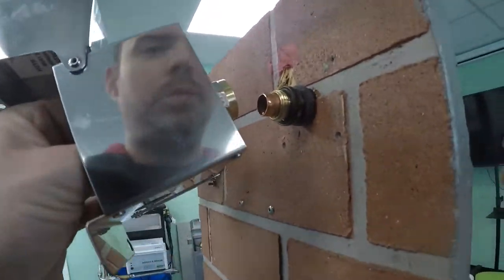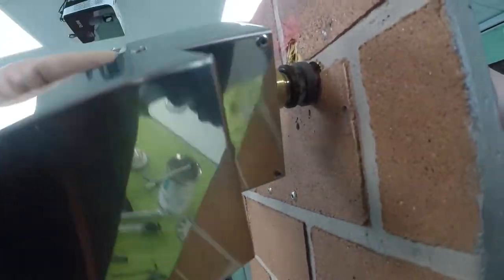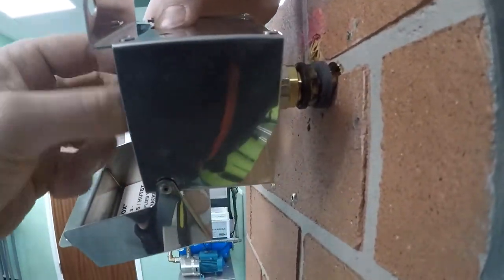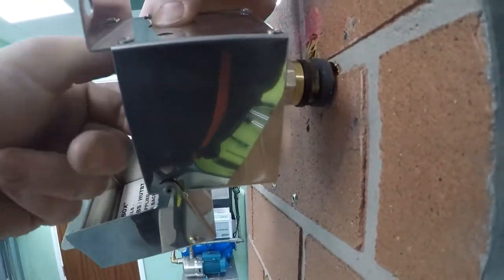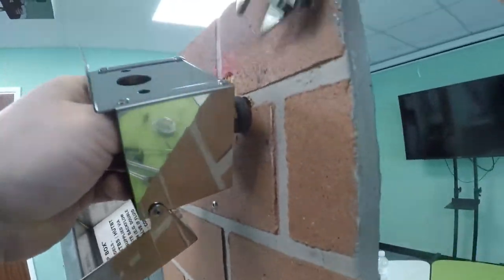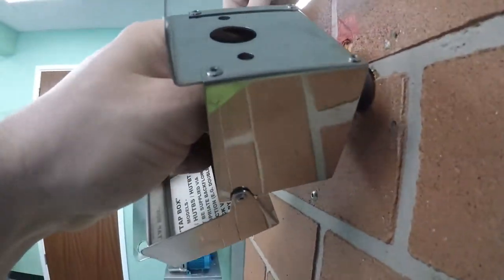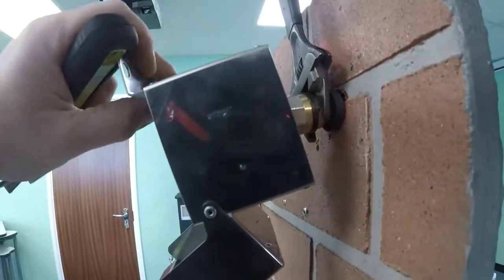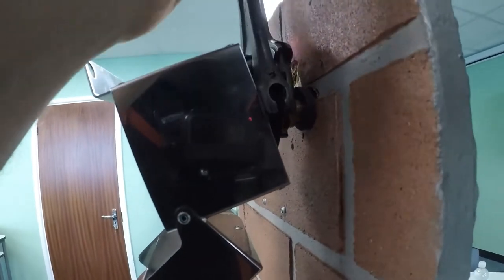Same again. Pop the ball valve through the hole. Spin it back onto the oyster. Tighten it up. Keep the other spanner back. Onto the ball valve.